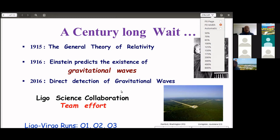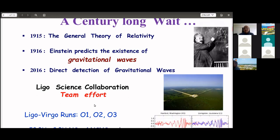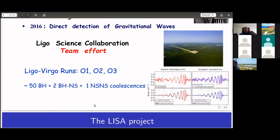It was a team effort through LIGO runs O1, O2, and O3, which found around 50 black hole events, of which two are black hole–neutron star events and one is a neutron star–neutron star event. The picture shows the LIGO detector in Louisiana, and the first event observed — GW150914 — showed nearly identical waveforms from detectors at Hanford and Livingston.